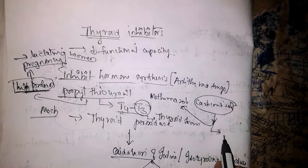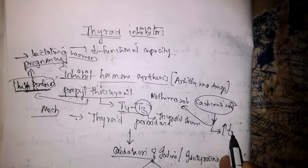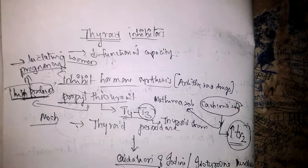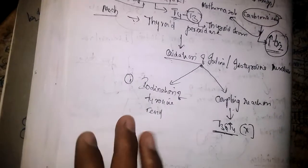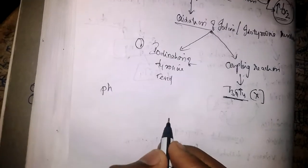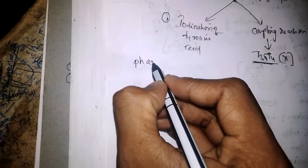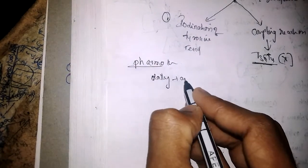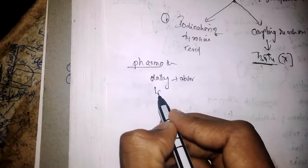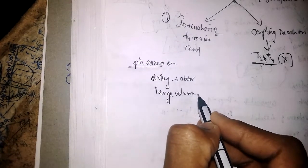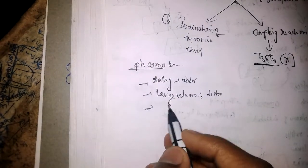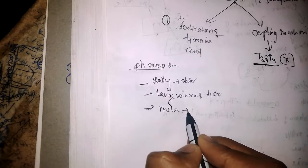Carbimazole is most commonly used nowadays and has a long half-life. Moving to pharmacokinetics of these drugs: they are orally absorbable, have a large volume of distribution, metabolism takes place in the liver, and excretion takes place in the urine.